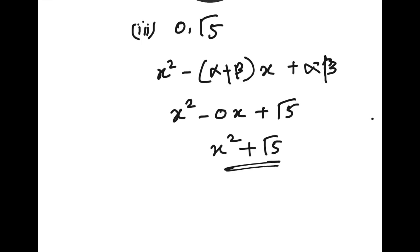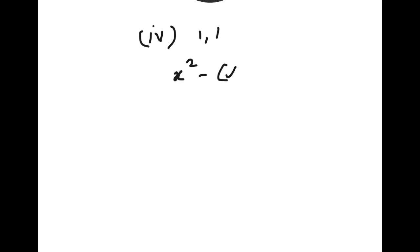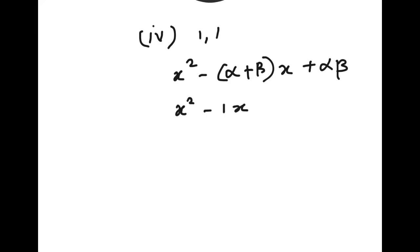The fourth question: the sum of zeros is 1 and the product of zeros is 1. Using x² - (α+β)x + αβ and substituting alpha plus beta equals 1 and alpha into beta equals 1, the polynomial is x² - x + 1.